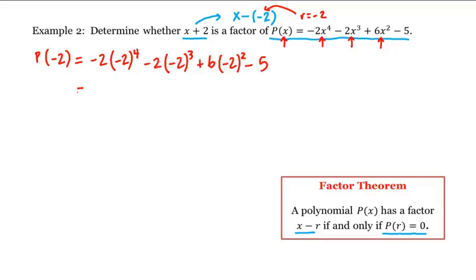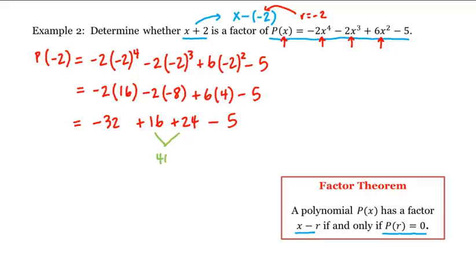Which is equal to negative 2 times 16, and then minus 2 times minus 8, and then plus 6 times 4 minus 5, which is equal to negative 32 plus 16 plus 24 minus 5. Now 16 plus 24 is 40, and 40 minus 5 is 35, so this is minus 32 plus 35, which is equal to 3, which is not 0.